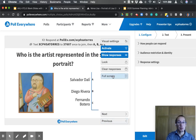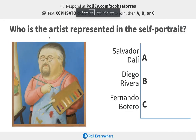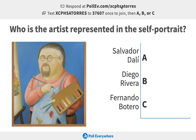Here's what the poll looks like now in full screen. You can see the question 'Who is the artist represented in the self-portrait?' with Options A, B, and C, plus the self-portrait image. In the upper section, students see instructions: if they have a web browser, they go to pollev.com/xcphsatorres. Or they can text xcphsatorres to the number shown. Once they join, they'll get a text message confirming they've joined the poll and can simply text A, B, or C — and this will populate automatically.